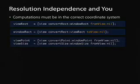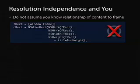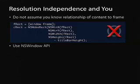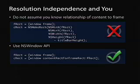Something you could do before resolution independence is compute the content rect for your window by getting the window frame and doing a simple subtraction to find the rectangle for your content view. However, that will not work when you've got a scale factor that's not 1.0, because you're going between coordinate systems. The correct thing to do is use the NSWindow API that's existed since 10.0 — get the window frame and pass it to contentRectForFrameRect, which automatically takes the scale factor into account.